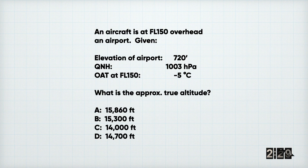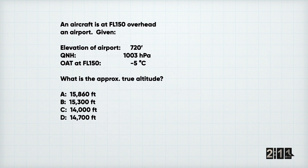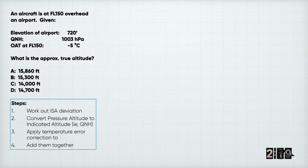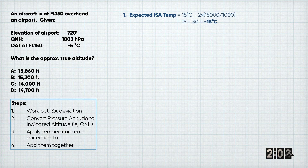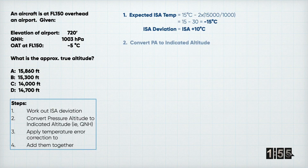Let's have a look at this exam question. An aircraft is flying at flight level 150 — given the following information, what's the approximate true altitude? Here are the steps. The first thing we want to do is work out our ISA deviation. I'm going to assume you know how to do that — so today we are ISA plus 10. The second thing we want to do is convert our pressure altitude, the flight level, into an indicated altitude.